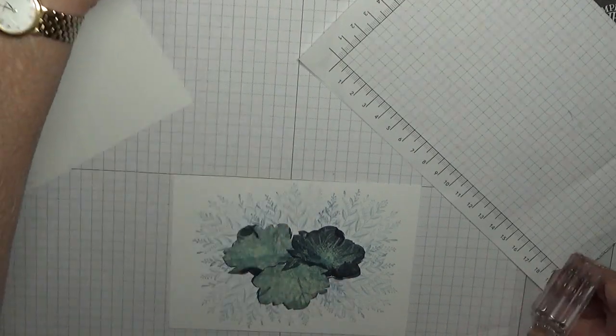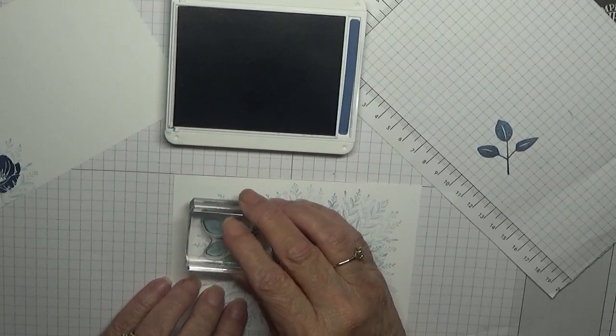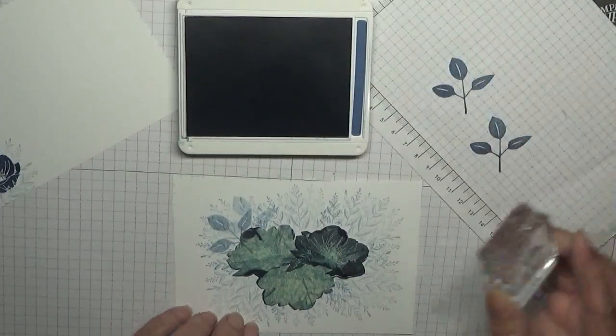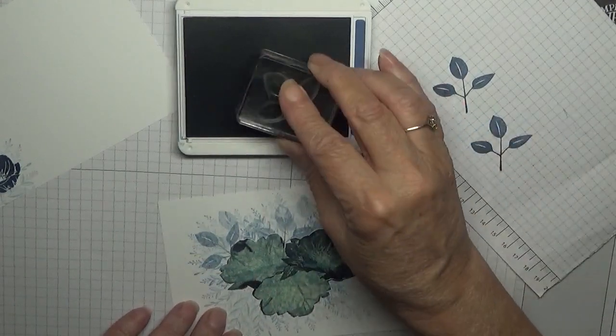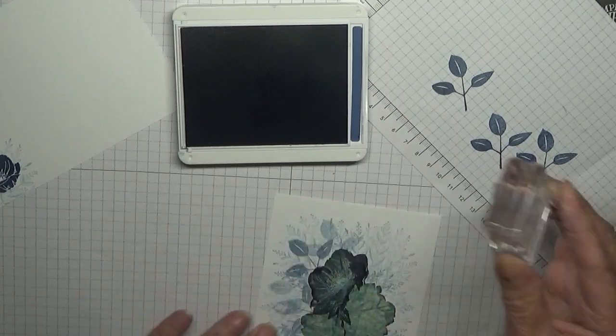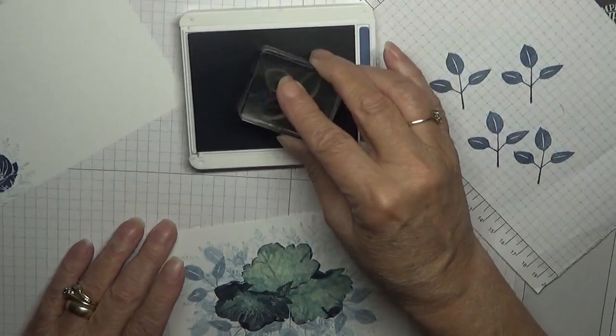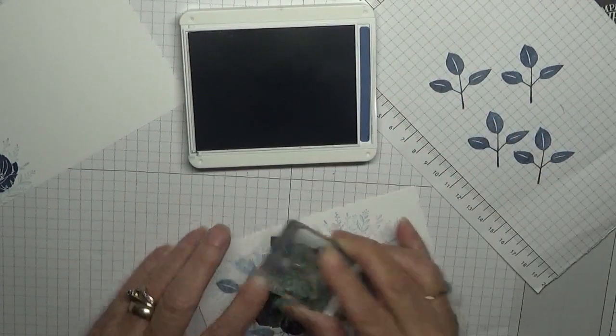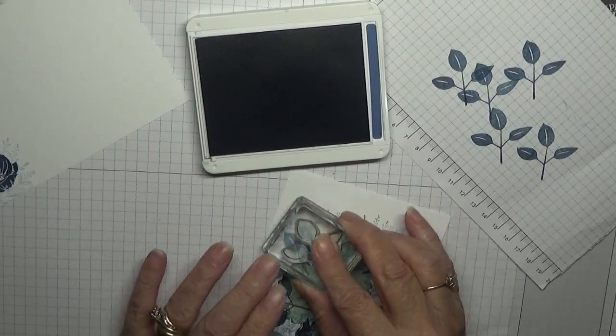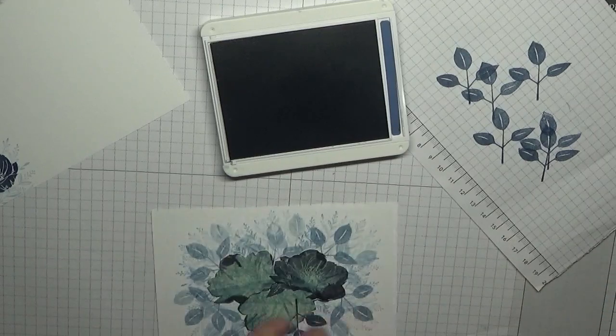With the big leaf and the Misty Moonlight again, I am going to ink up my leaf, stamp off, I'm going to stamp on and stamp off. That didn't make sense. So stamp off, stamp on, and then stamp again. That's better. Stamp off, stamp on, and stamp again. Stamp on, stamp on. I never stamped off, never mind.